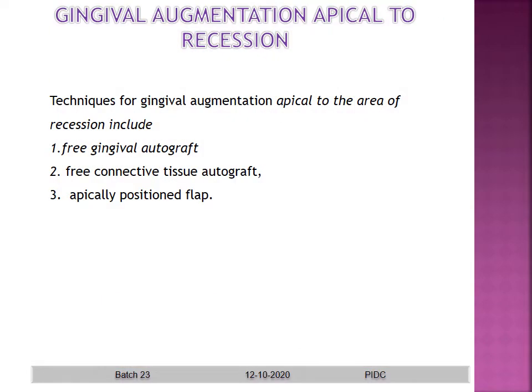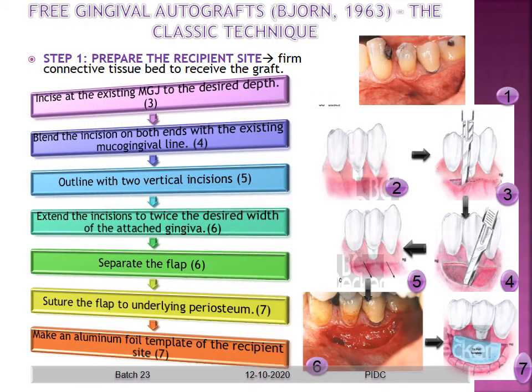This class is mainly confined to gingival augmentation apical to the recession area — increasing the width of attached gingiva through procedures such as free gingival autograft, free connective tissue autograft, and the apically positioned flap. We start with the free gingival autograft, a technique introduced by Nabers in 1963.